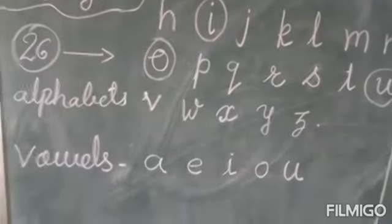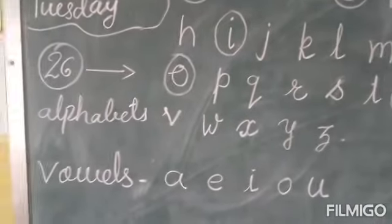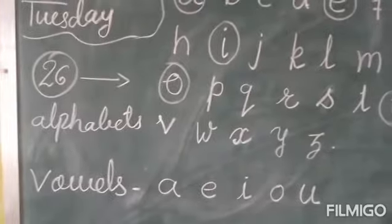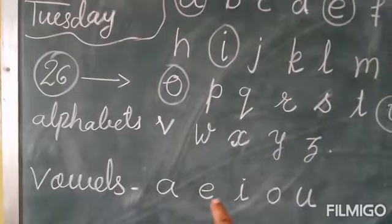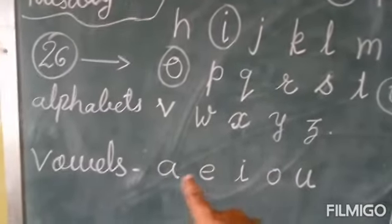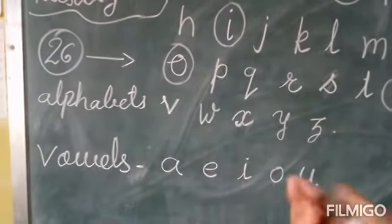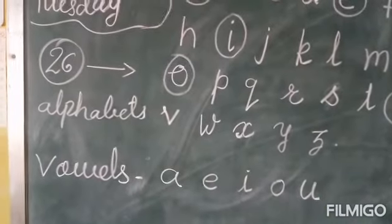Vowels of the alphabet, I know them all by name. A, E, I, O, U. A, E, I, O, U. I know them all by name.